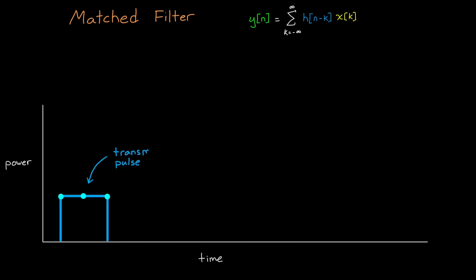We know the pattern of the pulse that was transmitted. In this case it's the rectangular pulse and it shows up in this equation as the filter H. We also know that when the pulse is received it will have the same general shape, since it's just being reflected by the object.